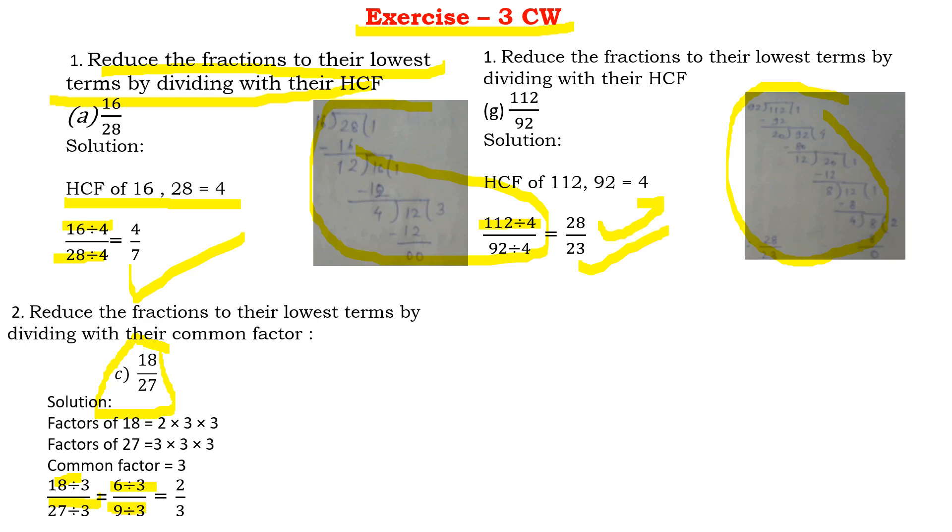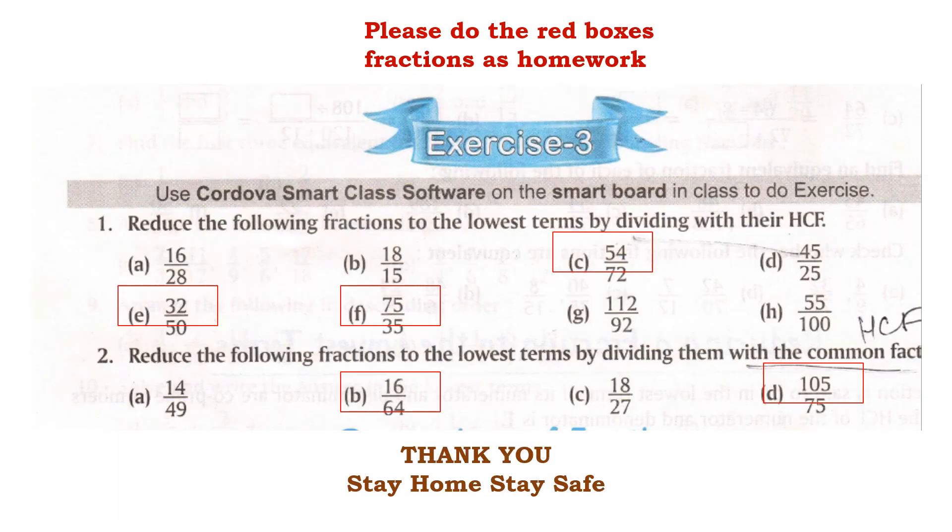So now we have some questions for you as homework. If you see here in exercise 3 all these red boxes are your homework. So your homework is E, C, F, B and D. So 5 questions for you to reduce them to the lowest form.